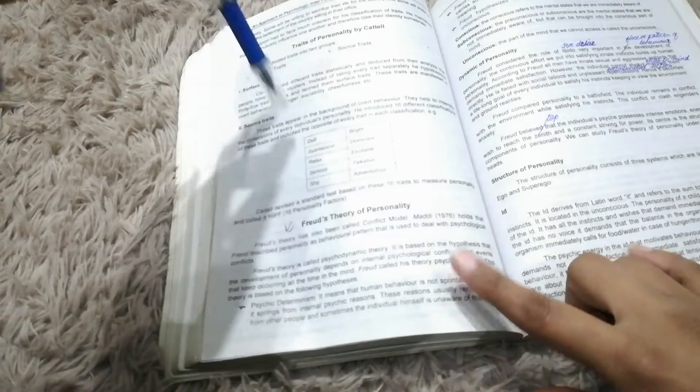First theory of personality. Very important. Freud - where is the name of Freud there is psychology. There is nothing. Freud is very famous in psychology. This is important.